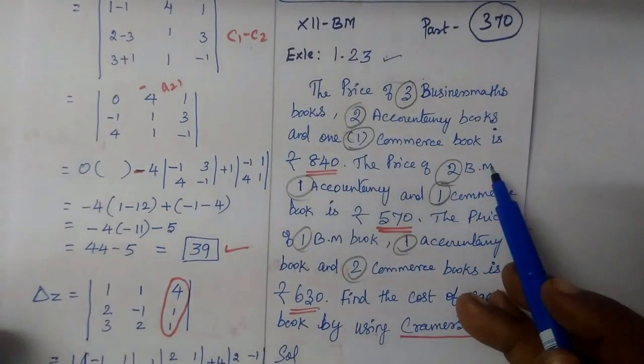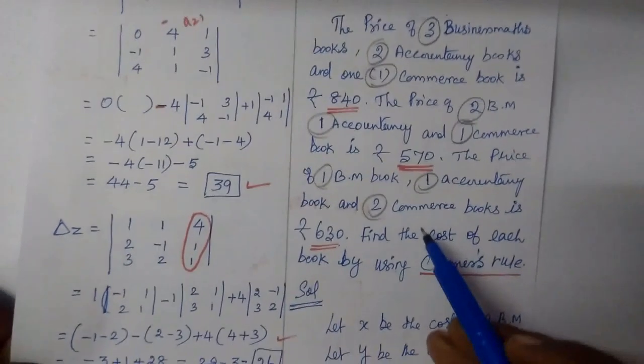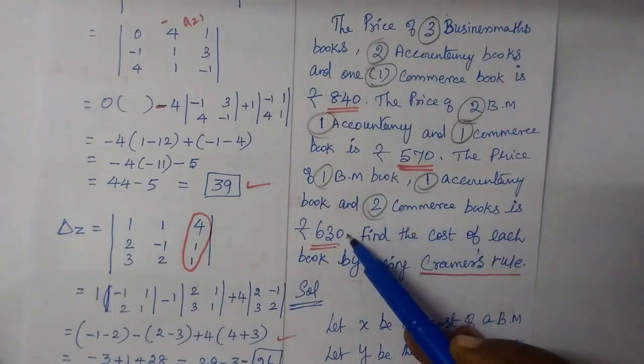And the price of 2 business math, 1 accountancy, 1 commerce, then 570. And the price of 1 business math, 1 accountancy, 2 commerce book, then 630.